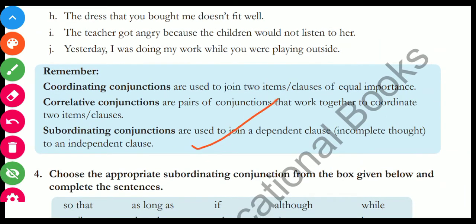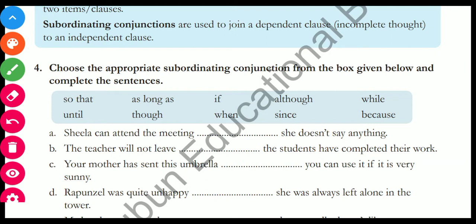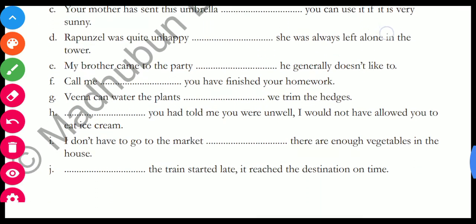Don't forget to read the box. Now coming to the fourth exercise: choose the appropriate subordinating conjunction from the box and complete the sentence. 'Sheila can attend the meeting ___ she doesn't say anything' — the answer is 'as long as'. 'The teacher will not leave ___ the students have completed their work' — the answer is 'until'. Try to complete the remaining sentences on your own.